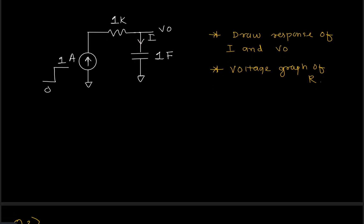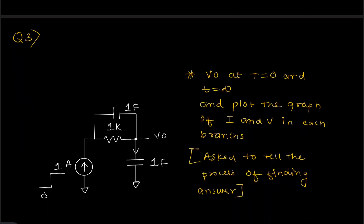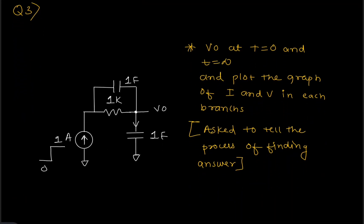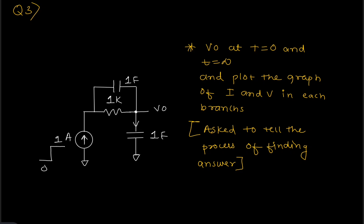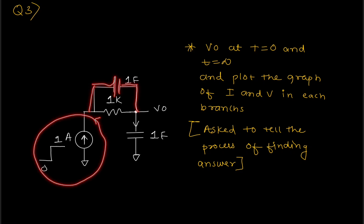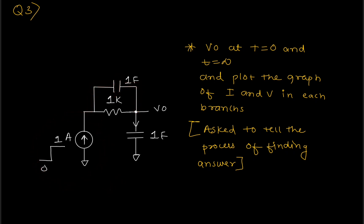Moving to the next question, they added a parallel capacitor over the resistor, with the same input as before. They asked the same things — to plot the voltage and to plot the current in each branch.